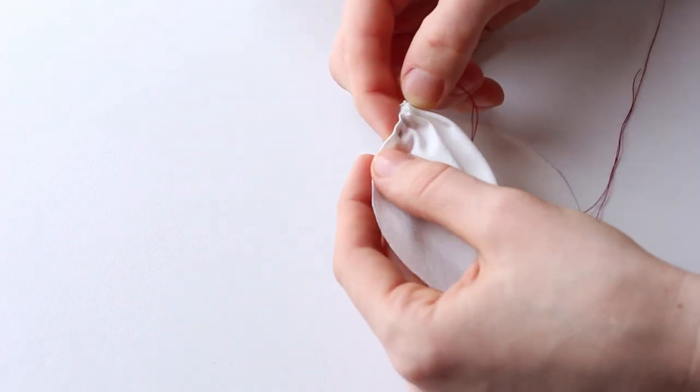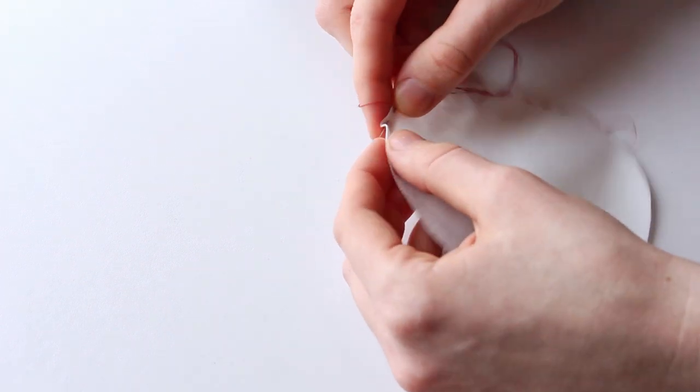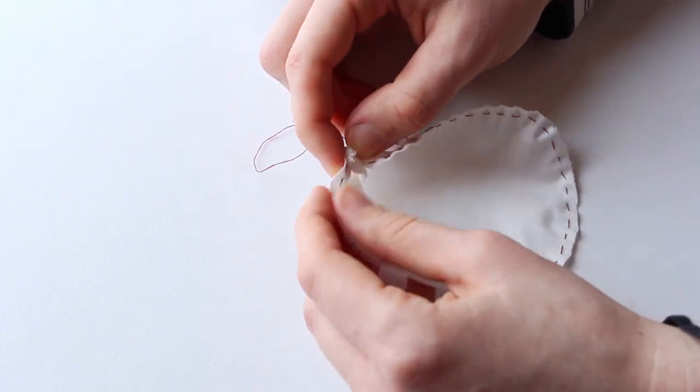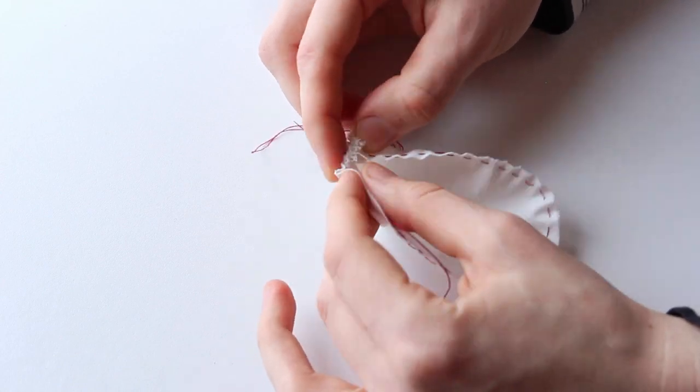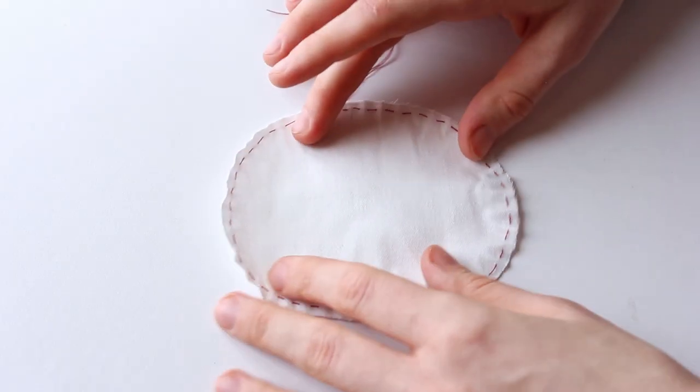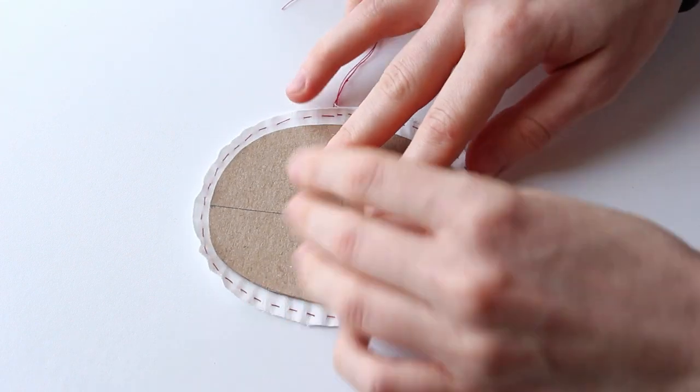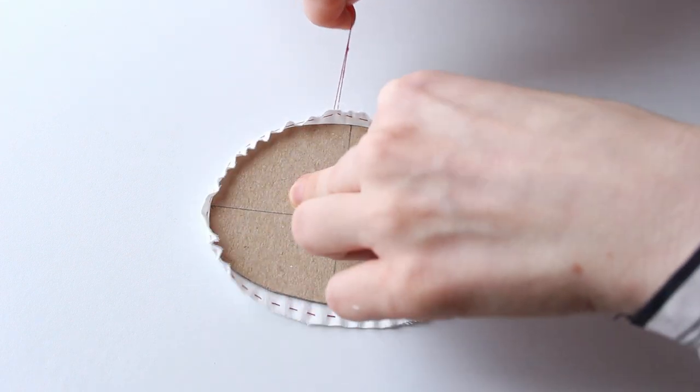Sew running stitches one-fourth of an inch from the edge of the base all the way around using strong thread. Place the cardboard base in the center, like this. Gather the circle and tie the thread tails together.